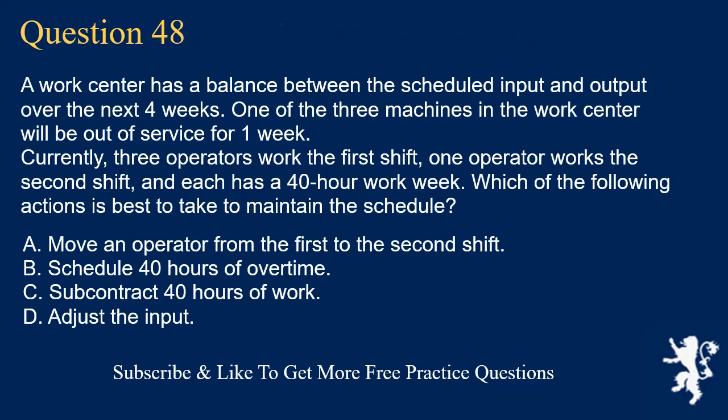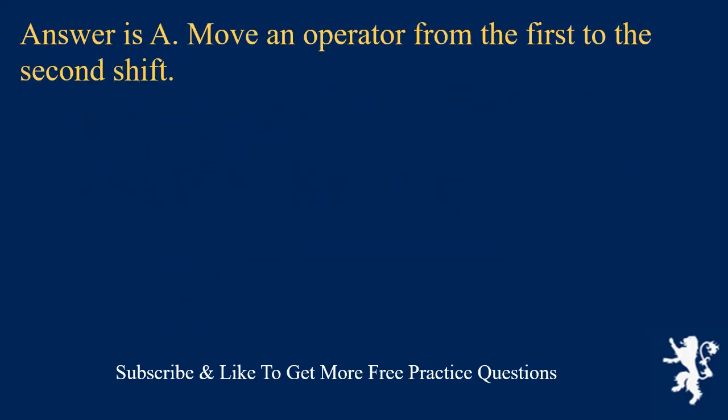Question 48. A work center has a balance between the scheduled input and output over the next four weeks. One of the three machines will be out of service for one week. Currently, three operators work the first shift, one operator works the second shift, and each has a 40-hour work week. Which of the following actions is best to take to maintain the schedule? A. Move an operator from the first to the second shift. B. Schedule 40 hours of overtime. C. Subcontract 40 hours of work. D. Adjust the input. Answer is A. Move an operator from the first to the second shift.